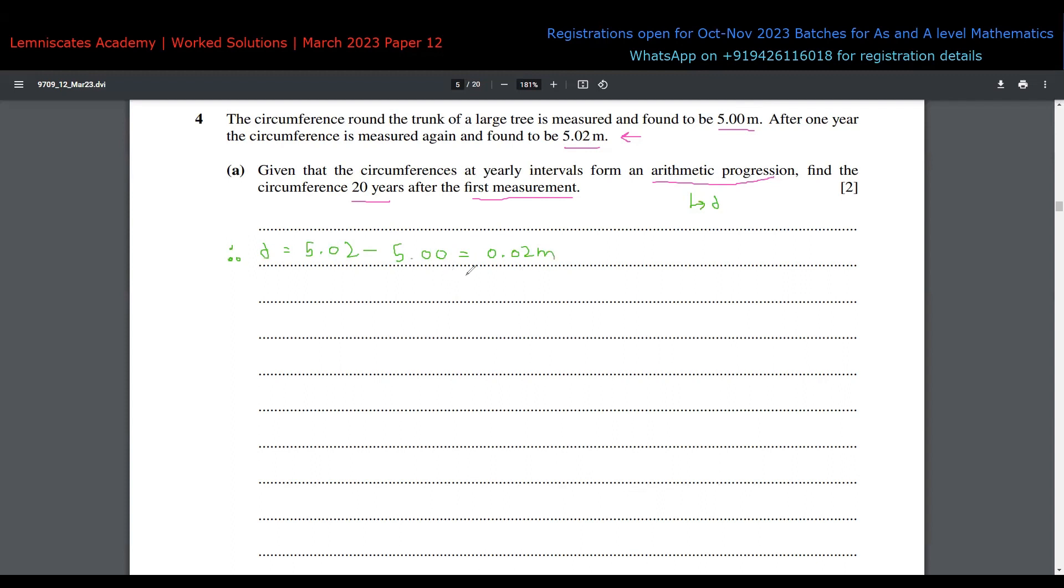The value of d is 0.02 meters. Let's say I'm considering this as my first term, 5.02. I'm not going to keep writing therefore symbols now and then. I can just draw an arrow and say that a equals 5.02, and the value of n given to us is 20. We're asked to find the term at position 20.